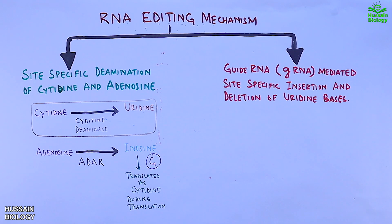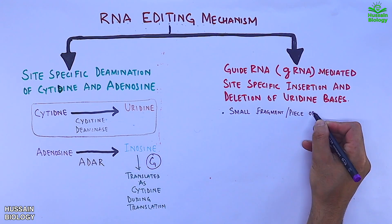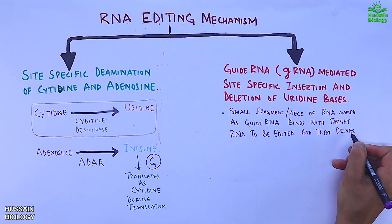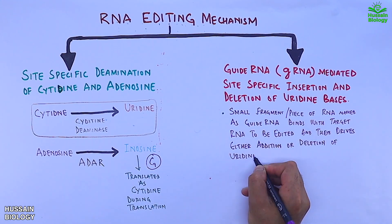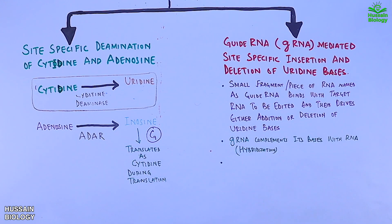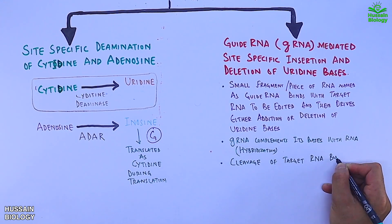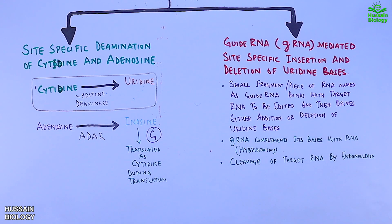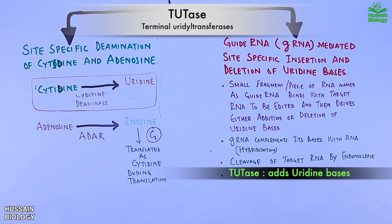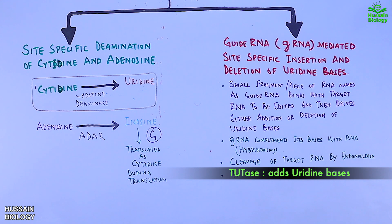On the other hand, in guide RNA-mediated insertion or deletion of uridine bases, a small fragment of RNA acts as a guide RNA that binds with the target RNA to be edited and drives either addition or deletion of uridine bases. The gRNA complements its bases with the target RNA, and an endonuclease in this process cleaves the target RNA.